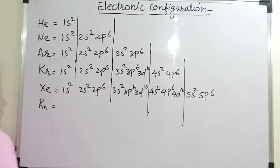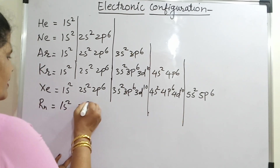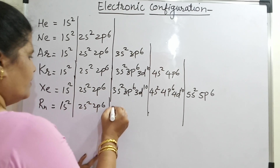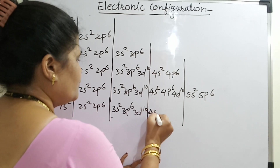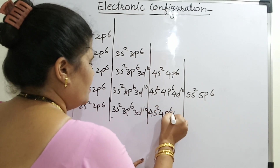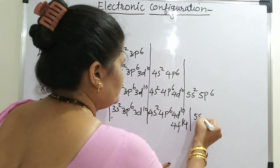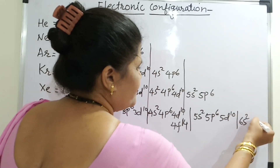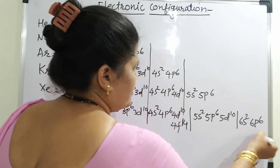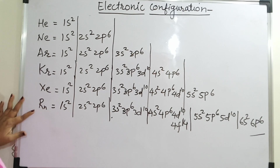What is very important for radon — you have to introduce 4f here. So: 1s2, 2s2, 2p6, 3s2, 3p6, 3d10, 4s2, 4p6, 4d10, 4f14, then 5s2, 5p6, 5d10, and the last will be 6s2 and 6p6. This is the electronic configuration — you have to remember this. You don't have to keep counting the number of electrons while filling in the orbitals. Thank you students.